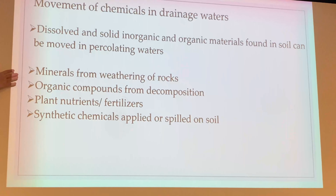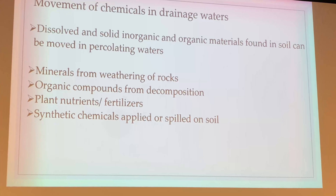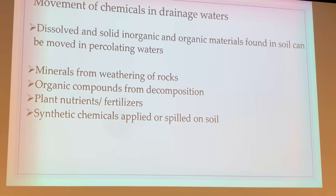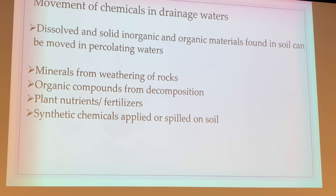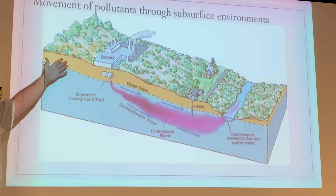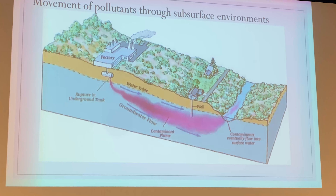We need to worry about minerals from weathering of rocks — they continue to break down and dissolve, sending nutrients into groundwater. Organic compounds, fertilizers, and pesticides can also move through the soil and contaminate groundwater through percolation. If we didn't have soil that could hold on to those compounds, our water supply would be contaminated. Water can also move from factories miles away from a stream — there are people at the EPA who monitor things like that.